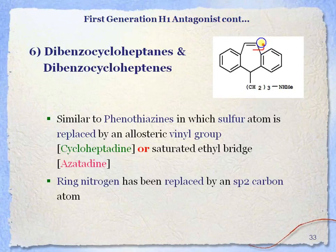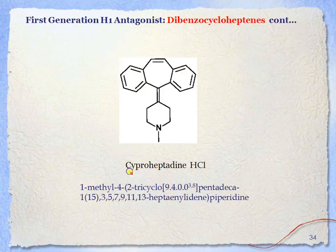The sixth class is dibenzocycloheptanes and heptenes, similar to phenothiazine but with the sulfur atom replaced by an allylic amino group or a saturated ethylene bridge. In azatadine, the ring nitrogen has been replaced by an sp2 carbon atom. An example is cyproheptadine hydrochloride.